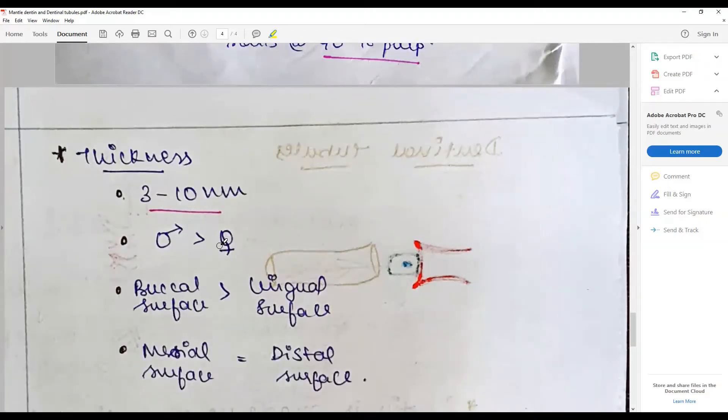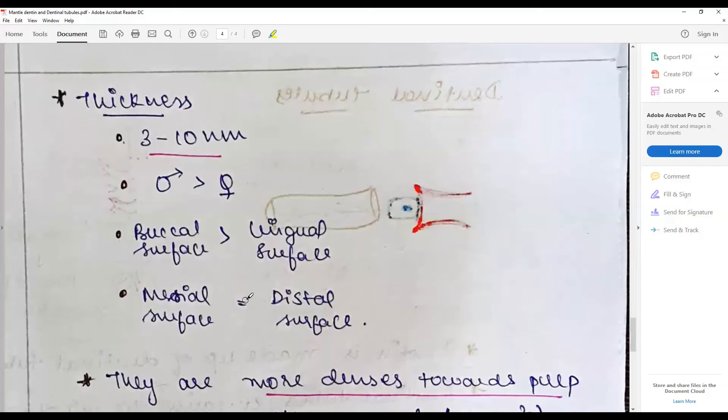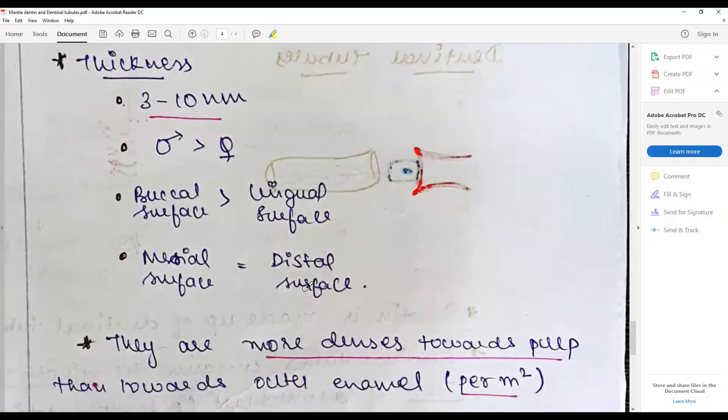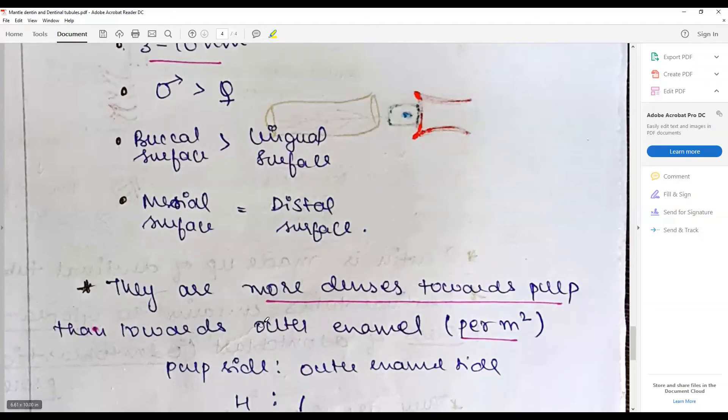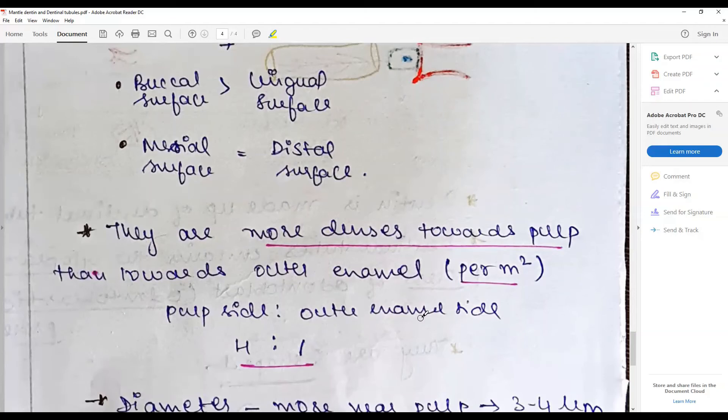The buccal surface is more common in males than in females. Thickness is increased in the buccal surface than the lingual surface, whereas the proximal surface numbers are the same. They are more dense towards the pulp than towards the outer enamel because of the decreased surface area. The pulp side to outer enamel side is in the ratio of 4 to 1.